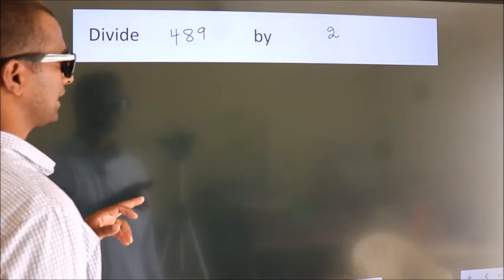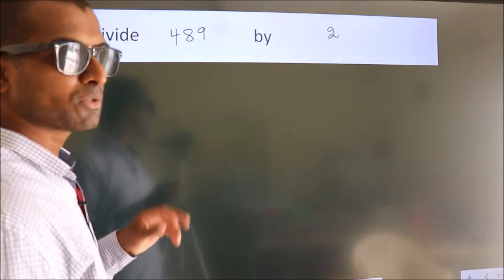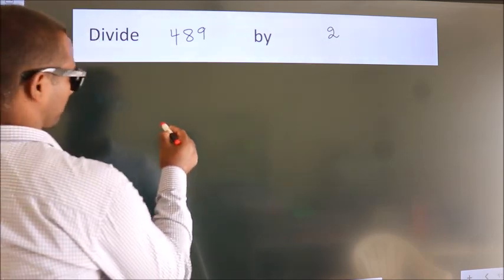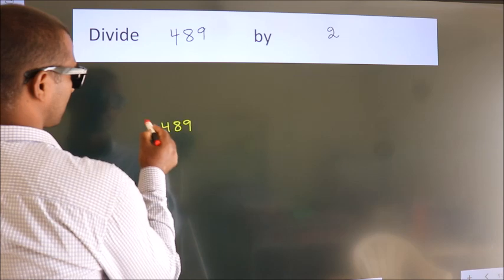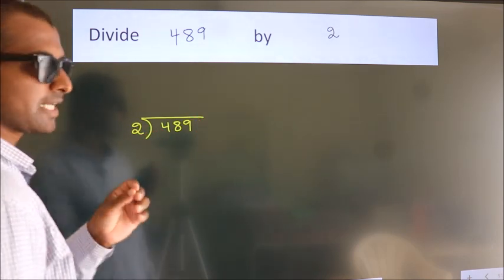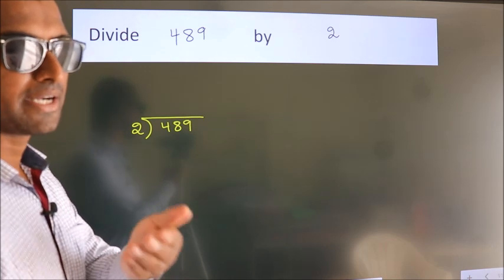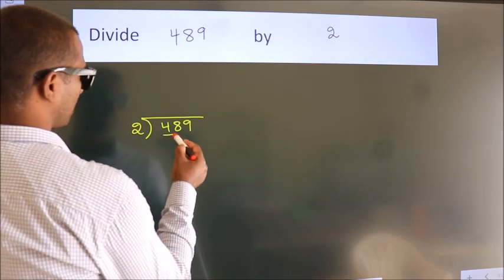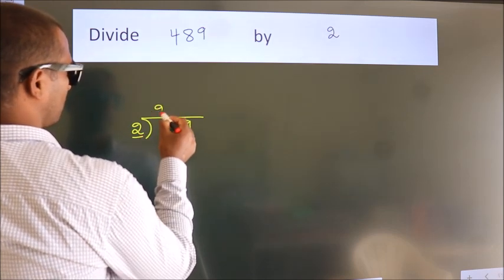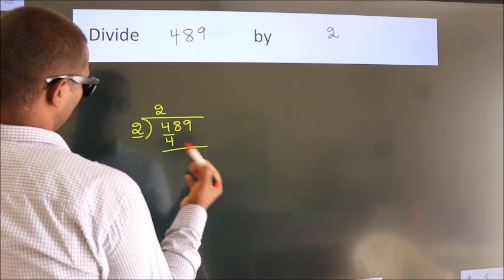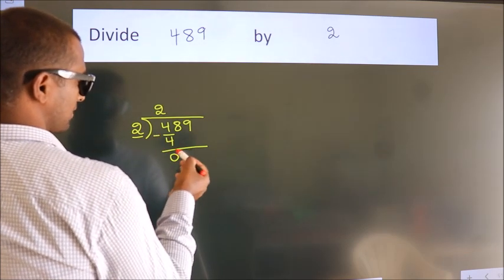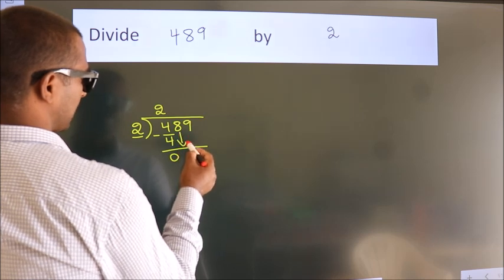Divide 489 by 2. To do this division, we should frame it with 489 inside and 2 outside. Step 1: we have 4 here, and 2 goes into 4 — in the 2 times table, 2 twos are 4. Now we subtract and get 0. Bring down the next number.